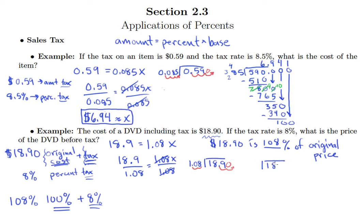The division problem that I really need to do here is 1890 divided by 108. Of course 108 goes into 189 once. I'm going to get a remainder of 81, drop down the zero. 108 goes into 810 seven times.